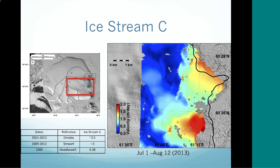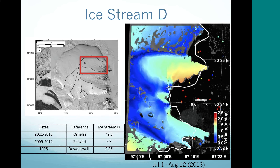Looking at Ice Stream C on the right, the land is on the left and water on the right. Compared to overlapping data, we see 2.5 meters per day compared to 3 meters per day. And 0.38 meters per day was the past data, so again a very significant increase in velocity. For Ice Stream D, we similarly see 2.5 meters per day compared to about 3 in overlapping data, and 0.26 meters per day in the past data compared to 2.5 — again, a very significant increase in velocities.